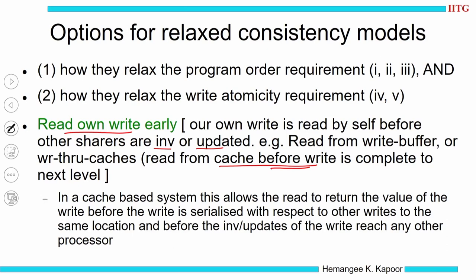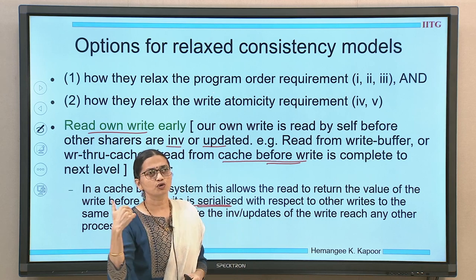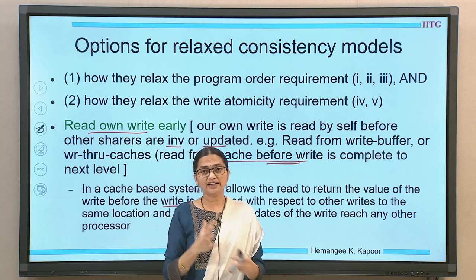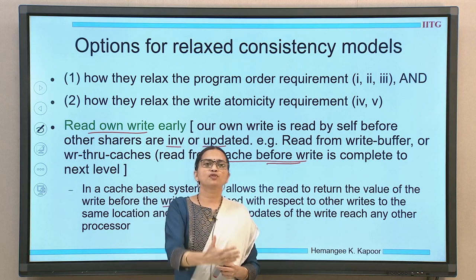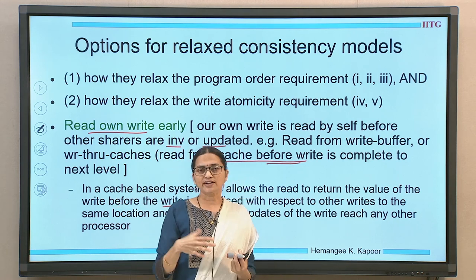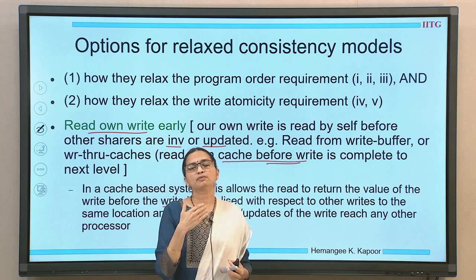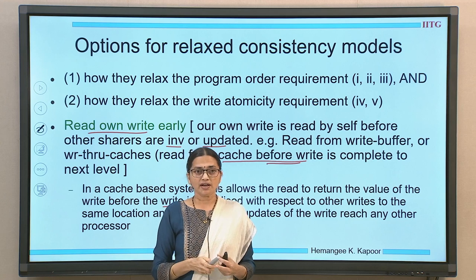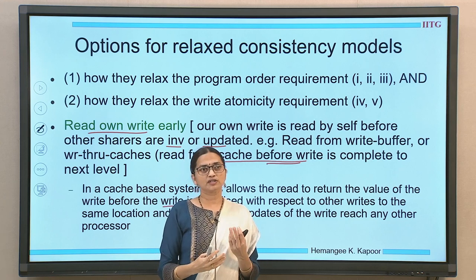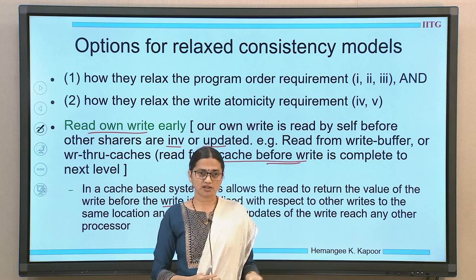In a cache-based system, this will permit me to read the newest values even before the write gets serialized. Remember, when a write happens in coherence, you have to go onto the bus and get serialized, or go through the network to the directory. So even before I get onto the bus — because I changed that write in my cache — before the write gets serialized, am I permitted to read my own value? If I am permitted, it would be faster; otherwise it is an unnecessary stall for the processor.